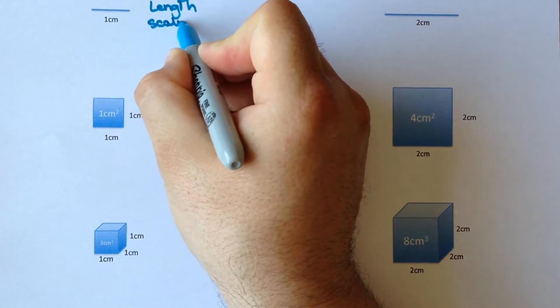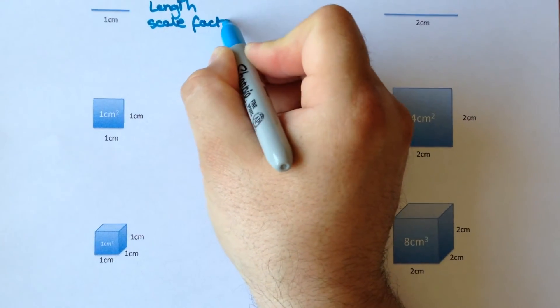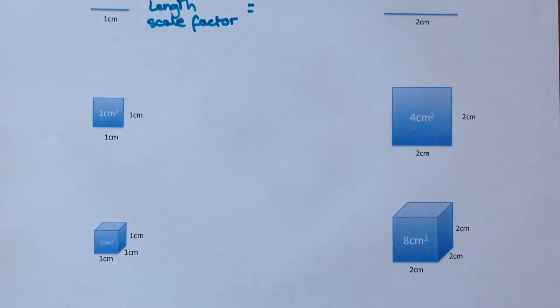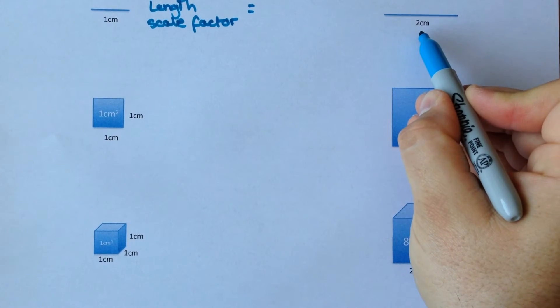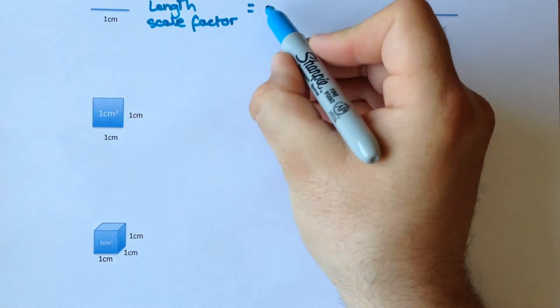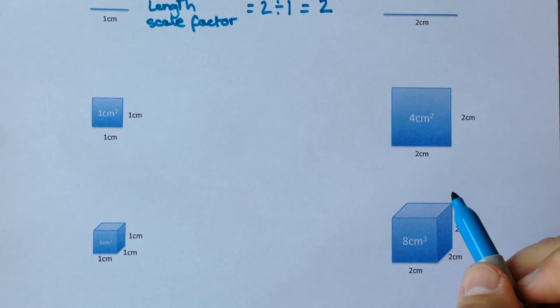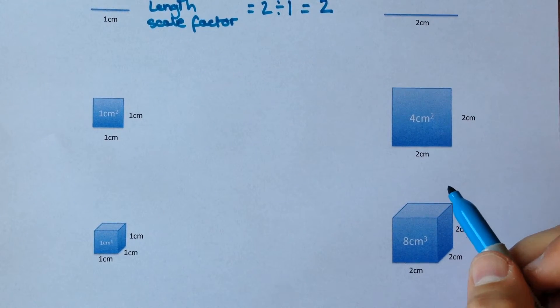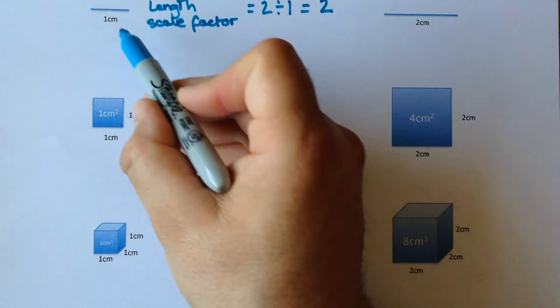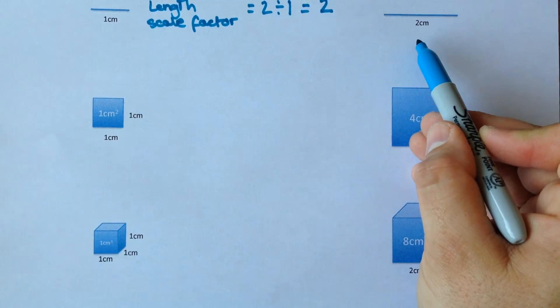So length scale factor is quite straightforward to work out. You take the new length, in this case 2cm, and you divide it by the original length, in this case 1cm, which gives you a length scale factor of 2. In other words, you multiply this length by 2 to get the new length.